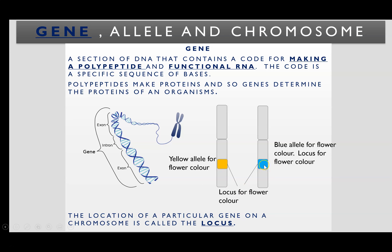In this example involving a particular plant, we've got a pair of chromosomes — a homologous pair, a term we'll come to shortly. The gene that codes for flower colour is in exactly the same position on both chromosomes, and that would be the locus for flower colour.